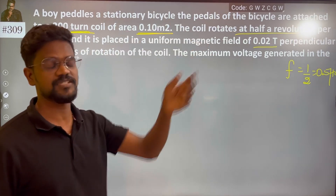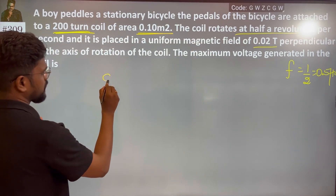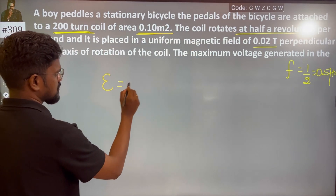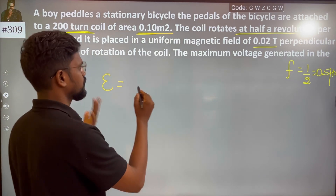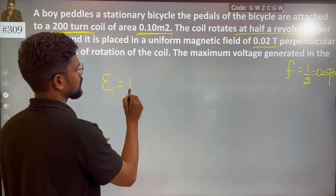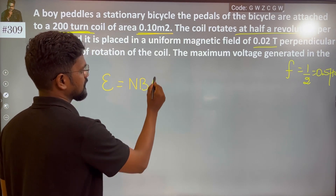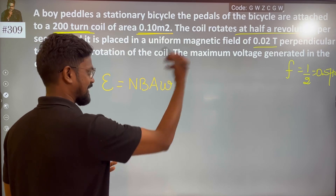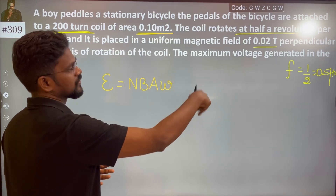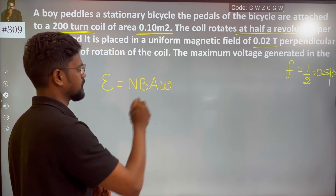The maximum voltage generated in the coil. We have the general formula: EMF = NBAω sin θ. At maximum, θ becomes 90 degrees, so sin 90° = 1.